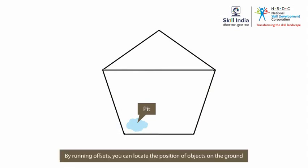By running offsets at the opposite ends of the pit, points A and B, you can locate the pit on the ground and check whether its position is correctly shown on the map.